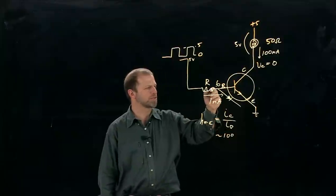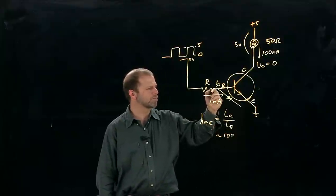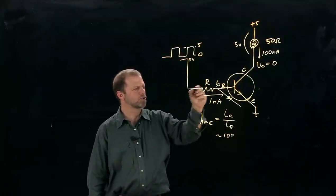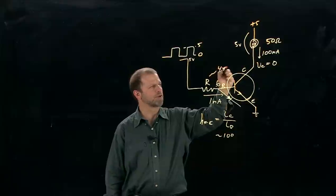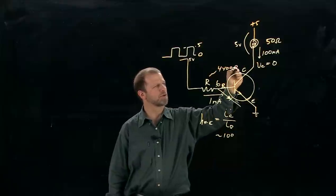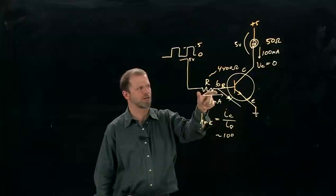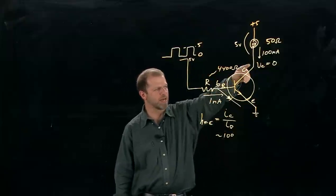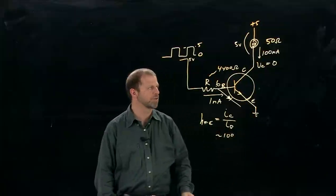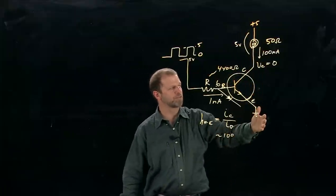So we'd calculate that R could be 4400 ohms, and then if there's 4.4 volts across that R, one milliamp will flow. The gain of the transistor is at least 100, so that allows 100 milliamps to flow.